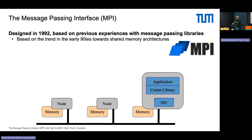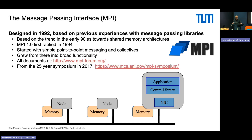The message passing interface — the idea of having a standard that allows us to communicate in shared-nothing architectures. It came in the early 90s when we started to have architectures with independent nodes connected just via network without shared memory. There were multiple libraries that needed to do that, and people got together and said, how can we do this once and for all? We have a dozen libraries that all do the same thing — can we come together and find one standard? That happened as MPI in 1994: MPI 1.0 got ratified, starting with point-to-point and certain collectives.